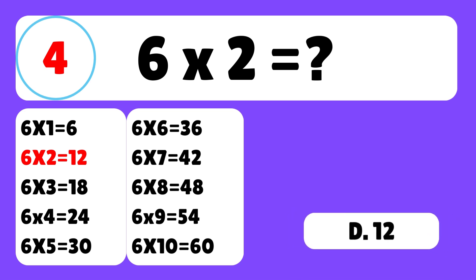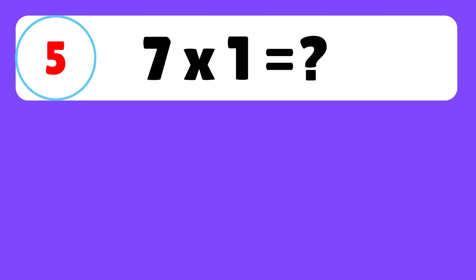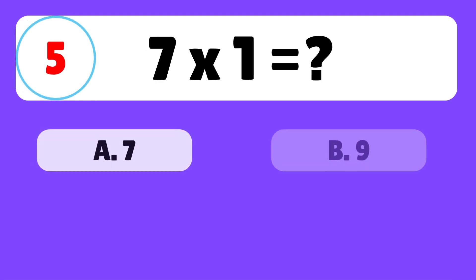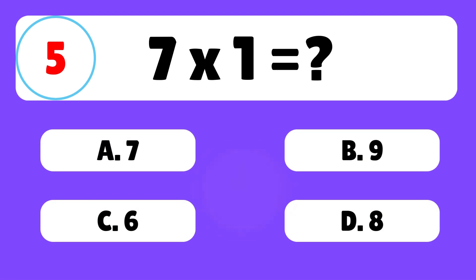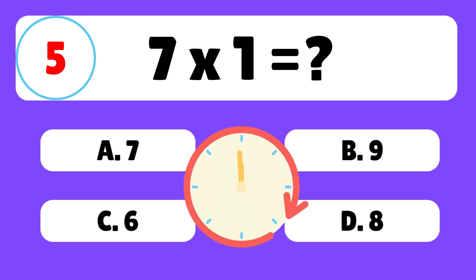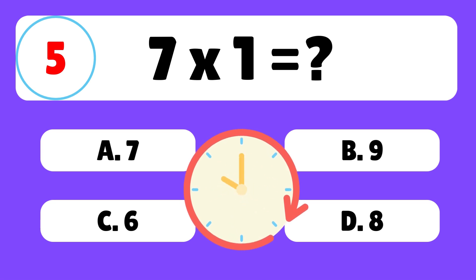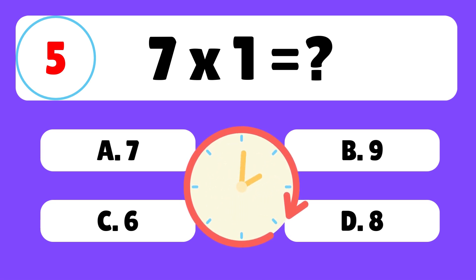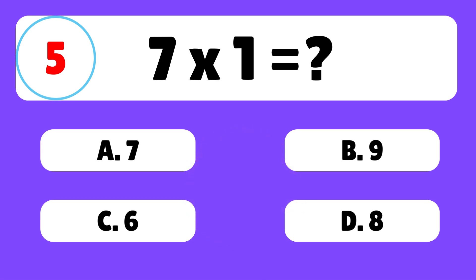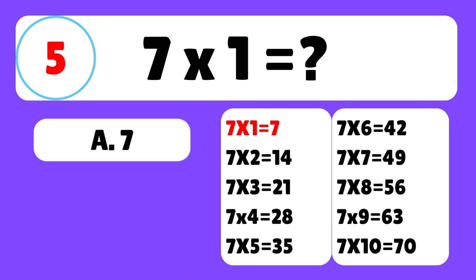Question 5. What is 7 times 1? The answer is D. 7 times 1 is equal to 7.